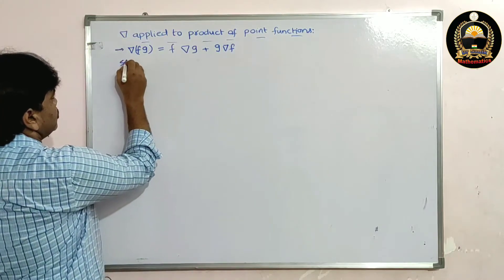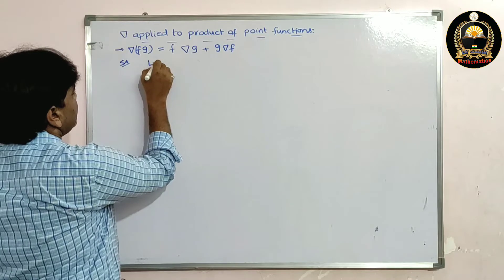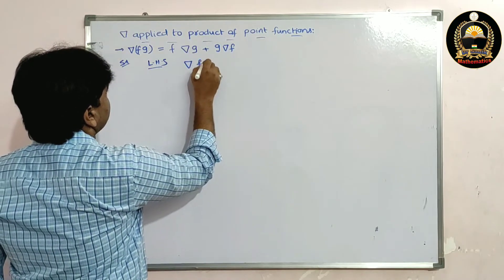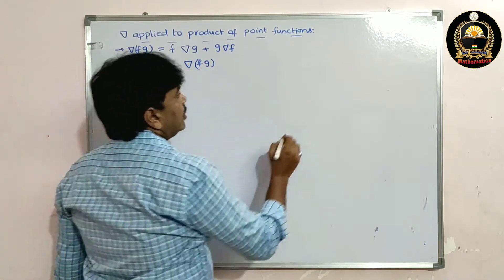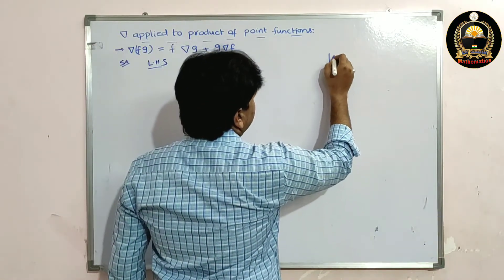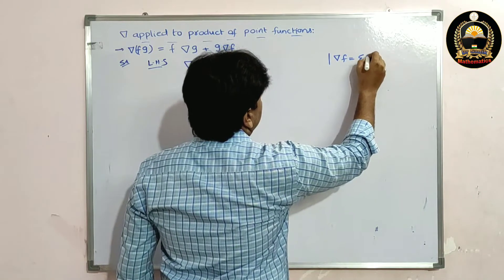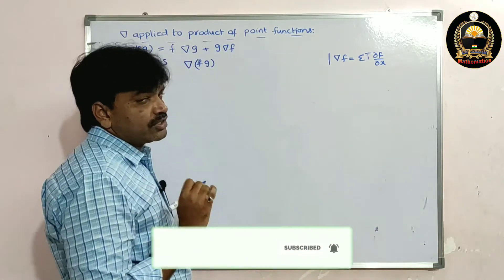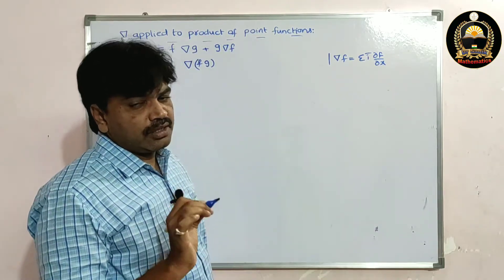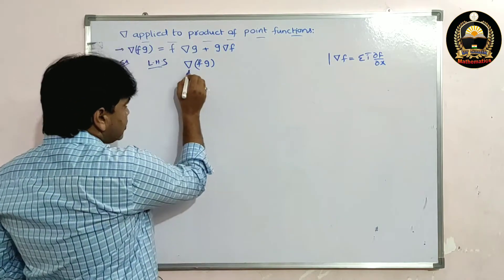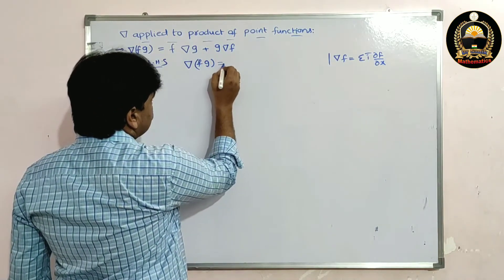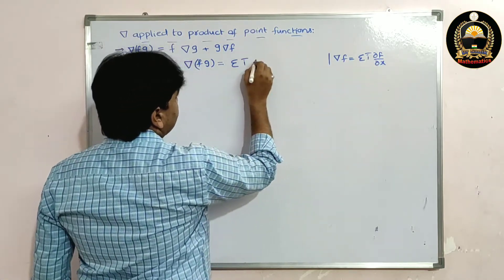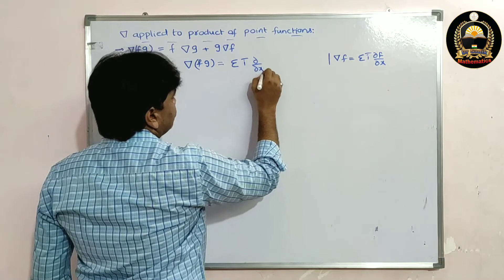Let us see the solution. LHS: del(fg). Now, what is the definition of grad f? Grad f is equal to sigma(i-bar · ∂f/∂x). So del(fg) is equal to sigma(i-bar · ∂/∂x of fg).